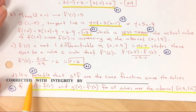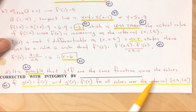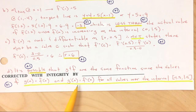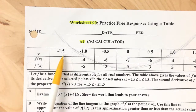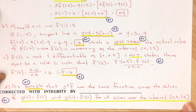It is possible that g and f are the same function since the values of g(x) equal f(x) for all values between negative 1.5 and 1.5, and g prime of x equals f prime of x for all values over the interval negative 1.5 to 1.5 — closed brackets because we know both endpoints exist. That accounts for all nine points.